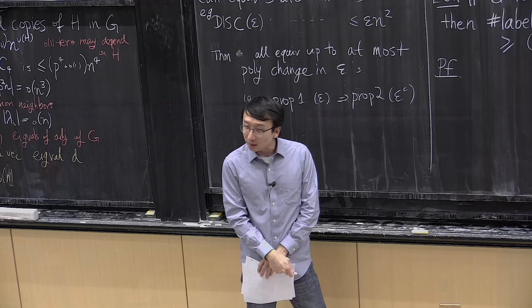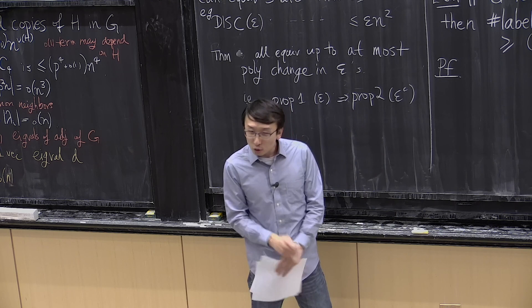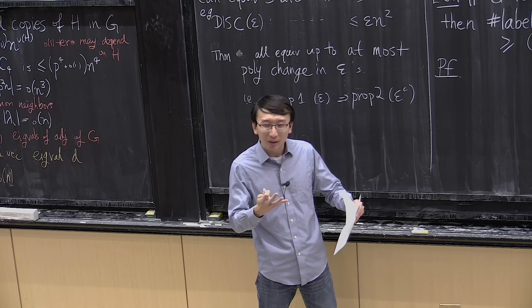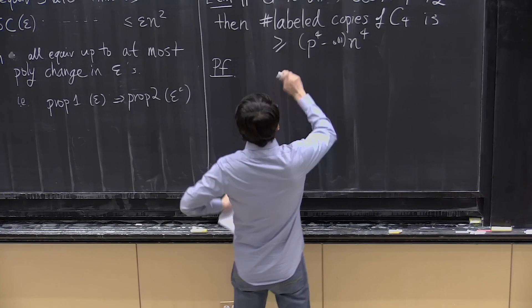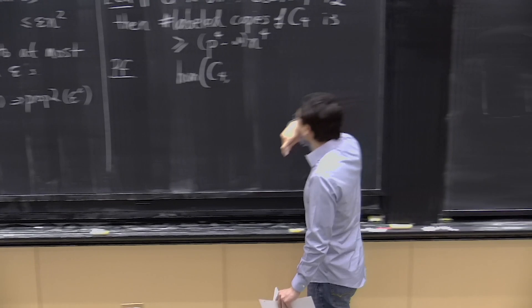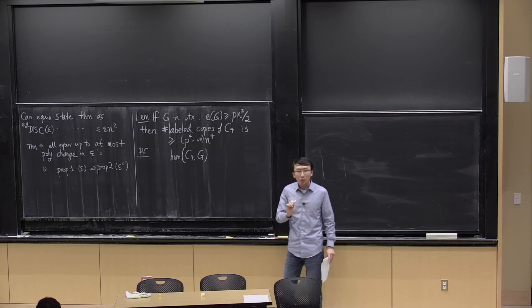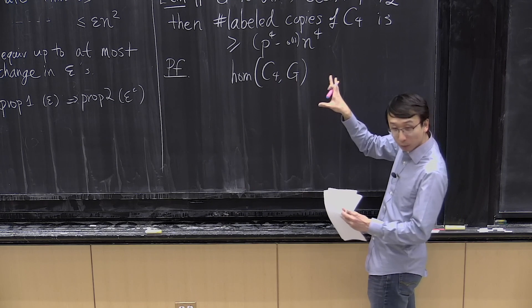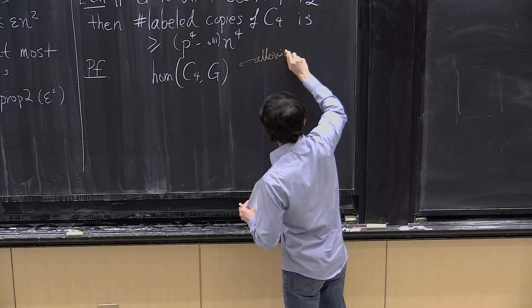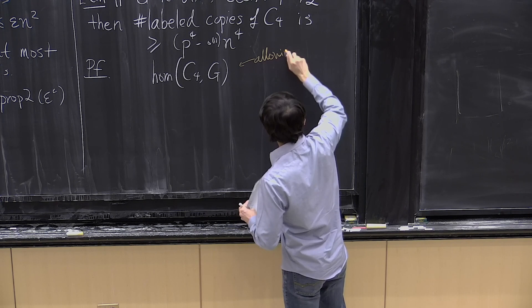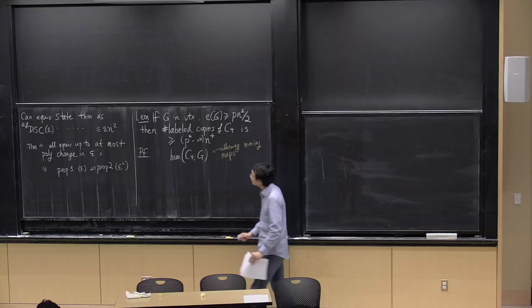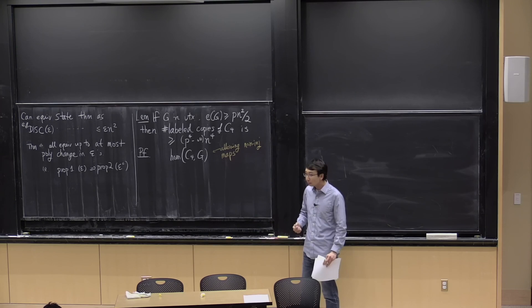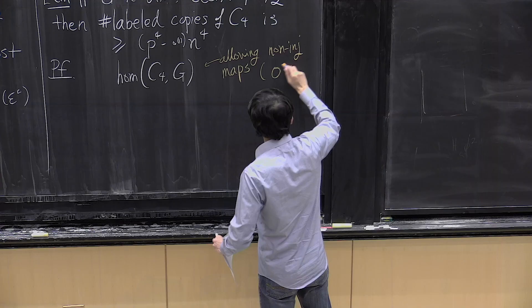I'll show you how to prove this inequality and also draw a sequence of pictures explaining how I think about applications of Cauchy-Schwarz. We are counting labeled copies of C4, which is basically — but not exactly — the same as the number of homomorphic copies of C4 in G. By homomorphic, I mean you're mapping vertices of C4 to G so that edges map to edges, but allowing non-necessarily injective maps. The number of non-injective maps is at most cubic, so it's enough to think about homomorphic copies.